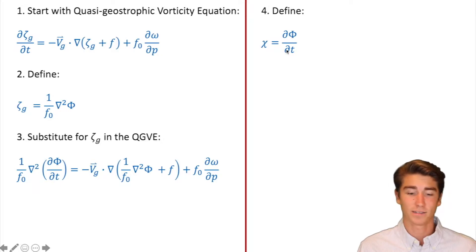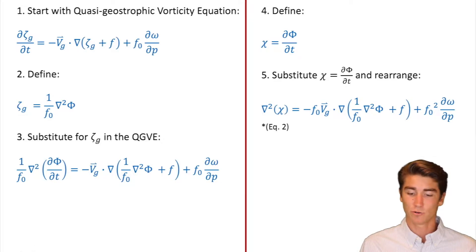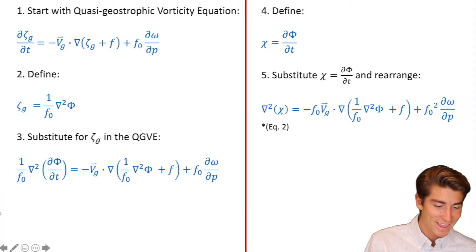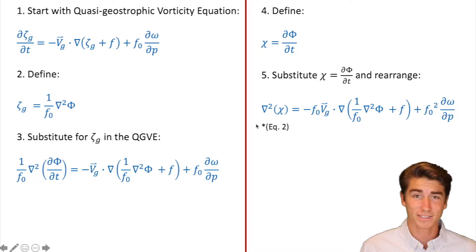Next up, we're going to define chi equals d phi dt again. And in step five, we're going to substitute. So where was the d phi dt in this? Right there. So that's just going to become a chi. And I believe, oh, there was one other thing we did. That one over f sub zero is going to get distributed to the right side. So it's no longer on the left hand side. You see here, there was no f sub zero on the outside. Now there is. And that f sub zero becomes an f sub zero squared. And we're going to call this equation two.